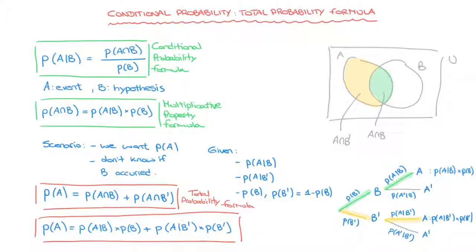We now know the total probability formula and have derived it using both a Venn diagram and a tree diagram. What we need to do now is work through an example to see how to use it, and we do that in the next tutorial.